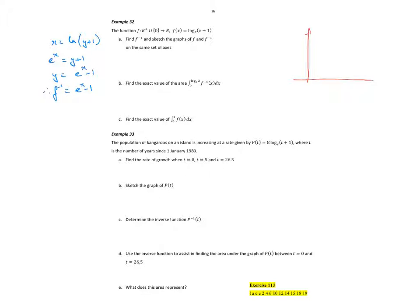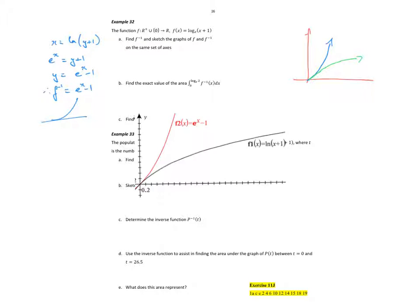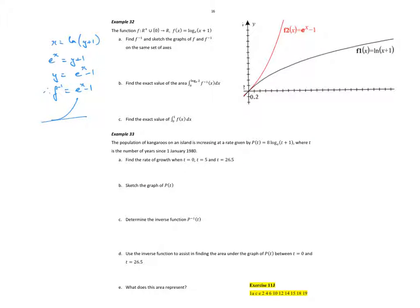If we do a quick graph sketch, in blue we know my e to the x graph looks like that. We're only sketching from the positive domain; at x = 0, e to the 0 is 1. My log function — the shift of 1 unit to the left means the asymptote will be at negative 1. At x = 0, I get natural log of 1 which is 0. So the graph looks a little bit like that.